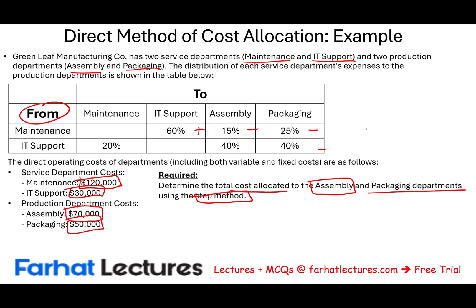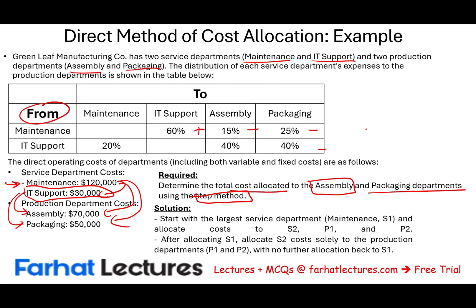When using the step method, we look at the service department with the largest resources — the most overhead — and start with that. In our situation, maintenance ($120,000) is greater than IT support. So we first allocate the $120,000: some to IT support, some to assembly, some to packaging. Then we take IT support and allocate to assembly and packaging without going back and allocating any IT support to maintenance.